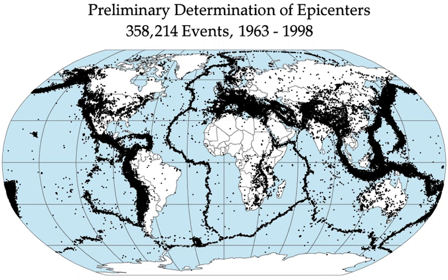Larger earthquakes occur less frequently, the relationship being exponential. For example, roughly ten times as many earthquakes larger than magnitude 4 occur in a particular time period than earthquakes larger than magnitude 5. In the low seismicity United Kingdom, for example, it has been calculated that the average recurrences are an earthquake of 3.7 to 4.6 every year, an earthquake of 4.7 to 5.5 every ten years, and an earthquake of 5.6 or larger every 100 years. This is an example of the Gutenberg-Richter law.